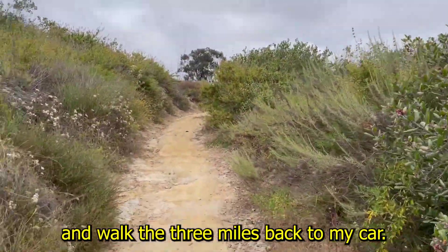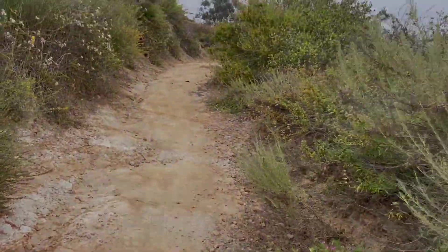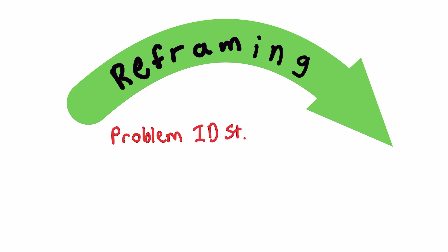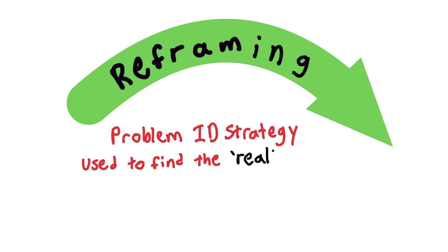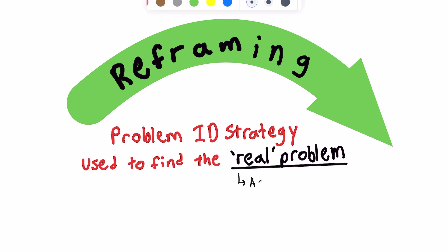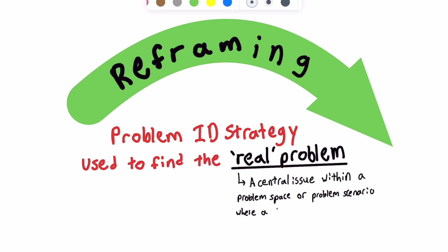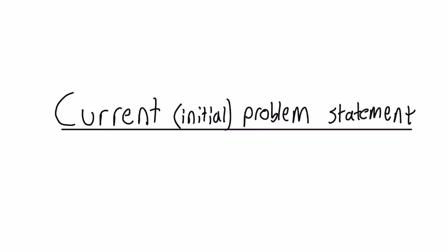Today's video is all about reframing problems. Reframing is a problem identification strategy that helps problem solvers identify the real problem. The real problem is a central issue within a problem space or problem scenario where a small, realistic adjustment will cause a large positive impact. Let's take a look at this hiker problem.